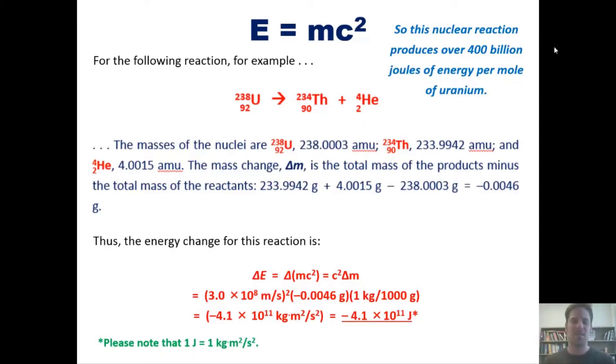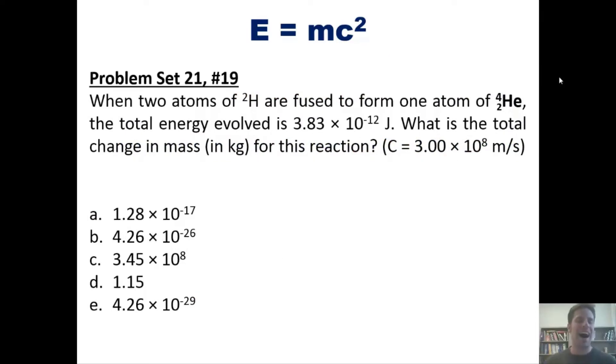Let's go on by looking at a problem. When two atoms of hydrogen-2, formally called deuterium, are fused to form one atom of helium-4, the total energy evolved is 3.83 times 10 to the negative 12 joules. What is the total change in mass in kilograms for this reaction, keeping in mind the speed of light is 3 times 10 to the 8 meters per second? I'm not going to show you how to do this but invite you to use this equation, E equals mc squared, to see if you can come up with the answer on your own.